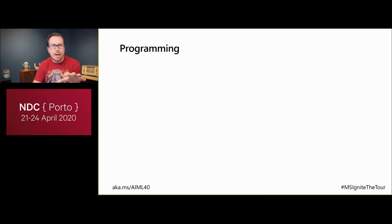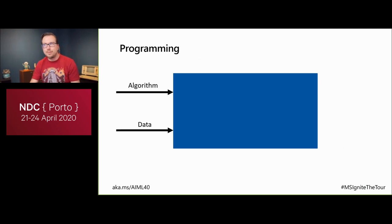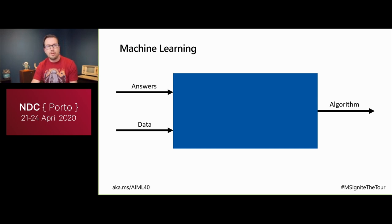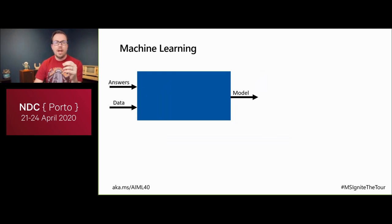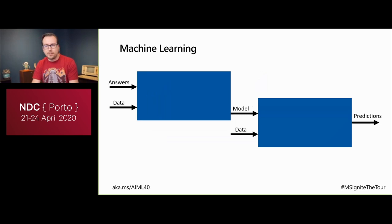Azure ML enables you to prepare data, build models, train models, manage and version all your models, and track the whole process through experiments. It also helps you deploy models. The key difference from traditional programming: instead of writing if-then-else statements to produce a function, machine learning takes a bunch of labeled data, runs it through a training algorithm, produces a model, and that model makes predictions on new data.